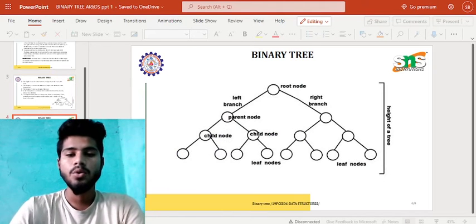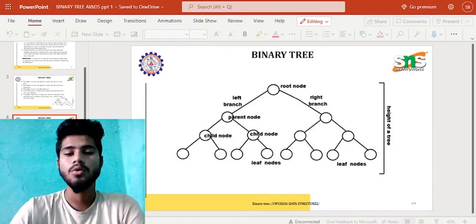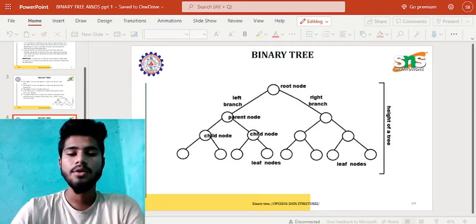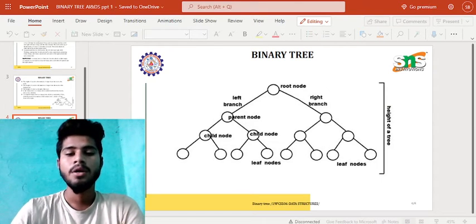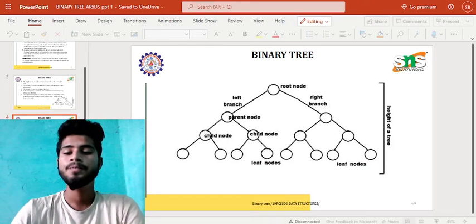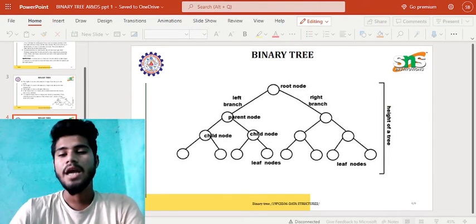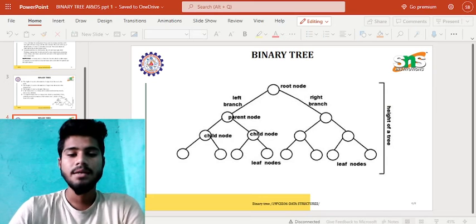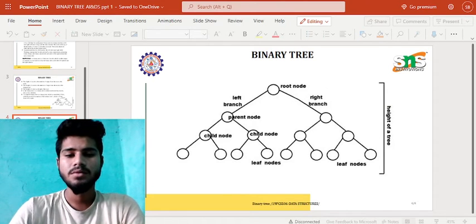The root node goes to the left and right, called left branch and right branch. From the left branch it has a parent node, and the right branch also has a parent node. From the parent node it becomes the child node, and from the child node it has the last node which is called the leaf node. In this diagram, the height of the tree from the left branch has a maximum height of three.